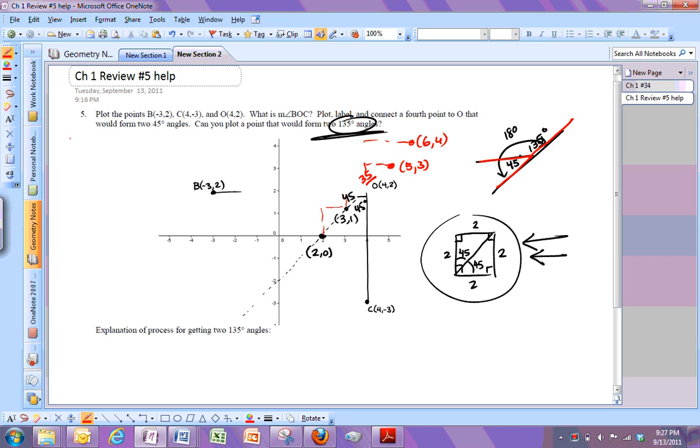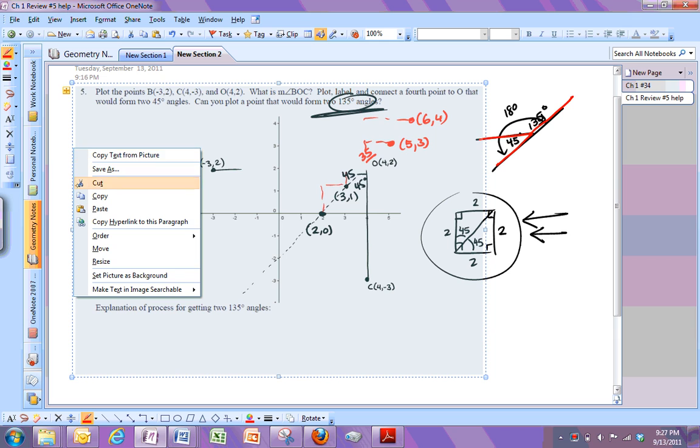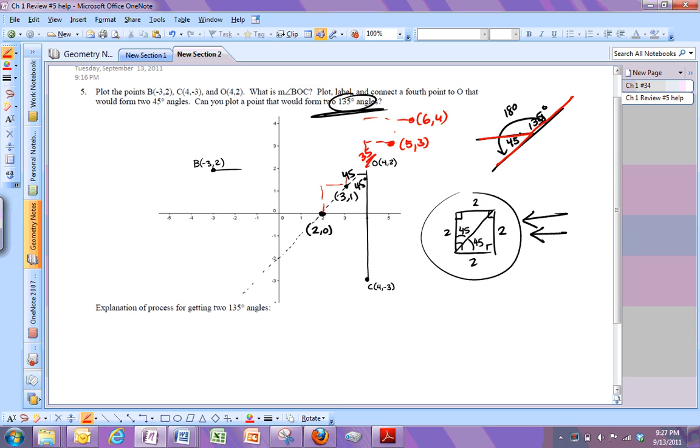Whoops. Sorry. Where's the undo? Oh, well. You get the idea. So one of them here, 135. And one of them here, 135. Okay. Hope that helps.